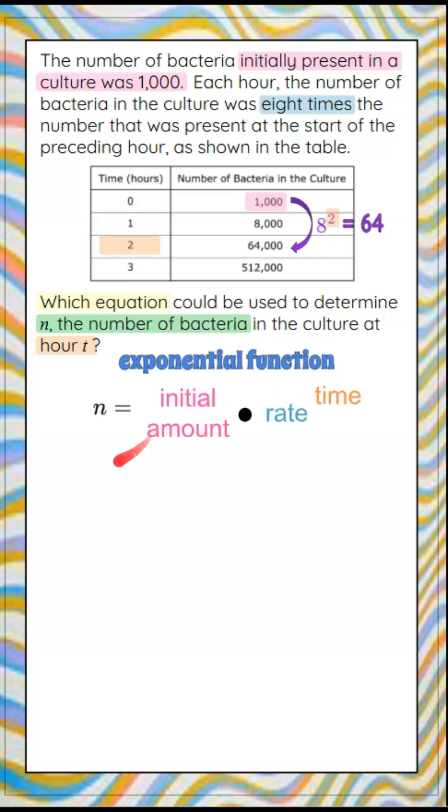So we're going to start with N equals the number of bacteria equals our initial amount. Initially present in a culture was 1,000. At zero hours, 1,000. So initially there were 1,000 bacteria in the culture.